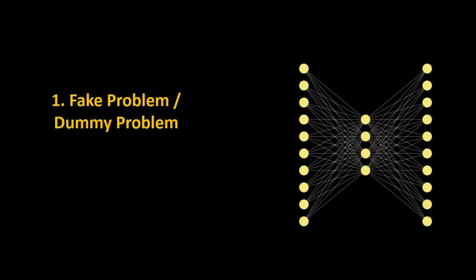We first try to solve a fake problem, or a dummy problem. This is a problem that we do not care about. We create a simple neural network model to solve a problem we do not care about. What we care about are the adjusted values of the weights obtained after training the model, and we extract these weights which will act as word embeddings. All this will become clear as we go further.